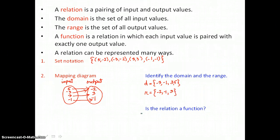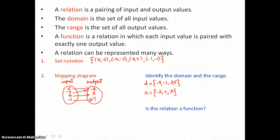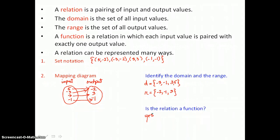Is the relation a function? Does it satisfy the definition — does every input value pair with exactly one output value? It does. No input value repeats: 5 is only paired to -2, -3 is paired to -2, 3 is paired to 3, and -1 is paired to -1. So yes, the relation is a function — it passes the definition of a function.